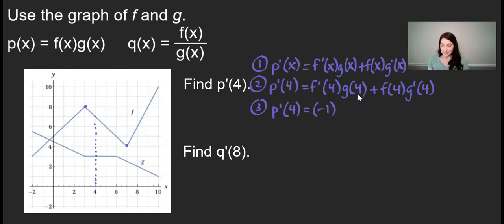g of 4 simply means the value of the function g at the x value of 4, and it looks like that has a y value of 3. Then we would add f of 4, which again is just the value of the function f at 4, which looks like we have a function value of 7.